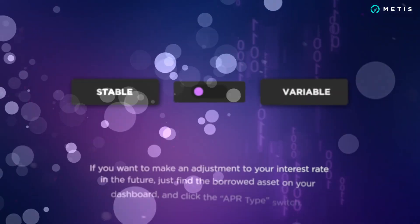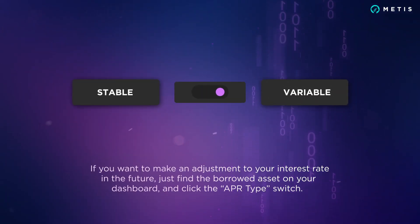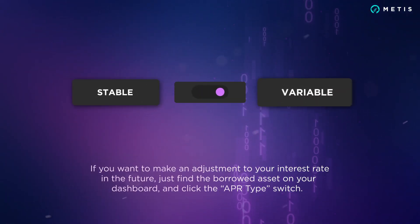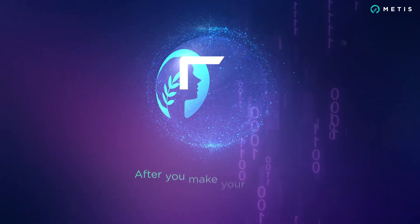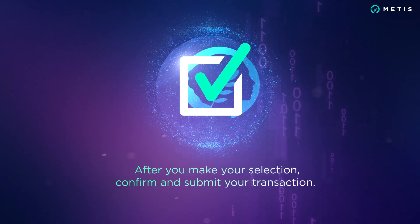If you want to make an adjustment to your interest rate in the future, just find the borrowed asset on your dashboard and click the APR type switch. After you make your selection, confirm and submit your transaction.